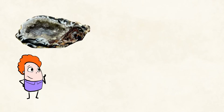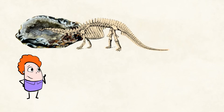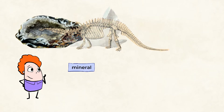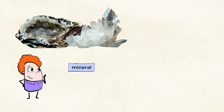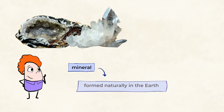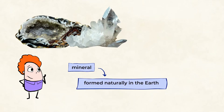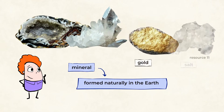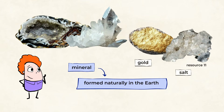And over a very, very long time, the animal remains are slowly replaced by minerals. A mineral is formed naturally in the earth, kind of like a rock — gold and salt are minerals. So the remains of our animal transform into literal stone. How cool is that?